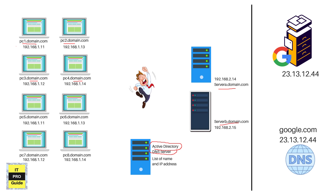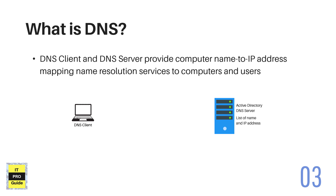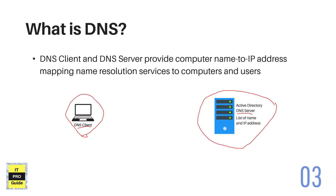Once you install Active Directory, a DNS server is also added to the server. When you set up a Windows 10 computer, a DNS client is automatically installed. When you want to join that computer to the domain controller, you need to provide the domain controller's IP address in the DNS client settings. Then when you try to join, the DNS client can automatically locate the Active Directory using just the domain name, because the DNS server IP is already configured.